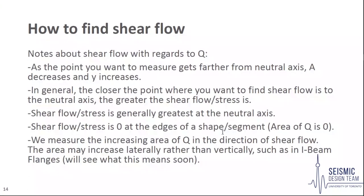Some general takeaways about the first moment of area: as the point you want to measure gets farther away from the neutral axis, A decreases and y increases. In general, the closer the point is to the neutral axis, the greater the shear stress or flow at that point, generally being greatest at the neutral axis. Shear flow is zero at a free edge since the area of Q is zero. We measure the increasing area of Q in the direction of shear flow, which may increase laterally rather than vertically, as seen in I-beam flanges.